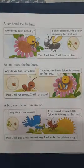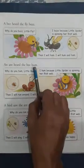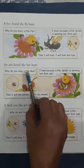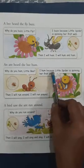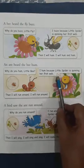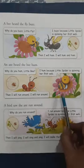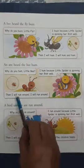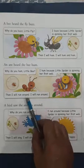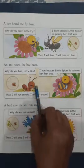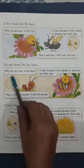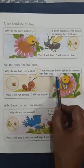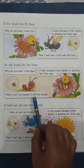After that, an ant heard the bee hum. Then the ant asked, why do you hum, little bee? Then bee said, I hum because little spider is spinning her first web, and I am very happy, so I hum. Then the ant said, then I will run around. I will run around. So read again. Why do you hum, little bee? I hum because little spider is spinning her first web. Then I will run around. I will run around.